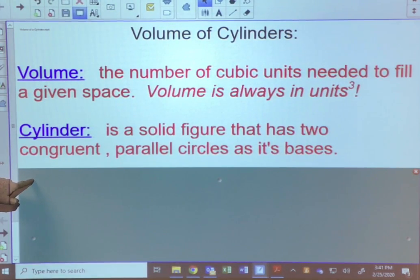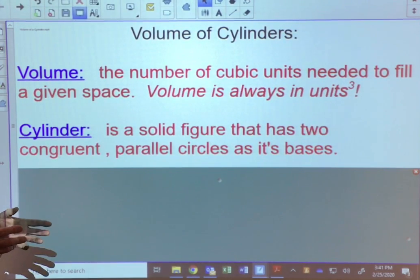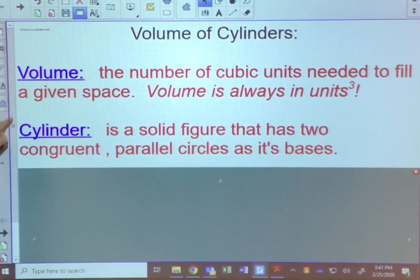A cylinder, we remember, is a solid figure that has two congruent parallel circles as its bases. So picture a tin can, a Pringles can, something like that.